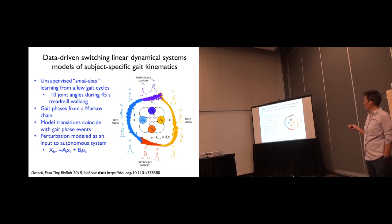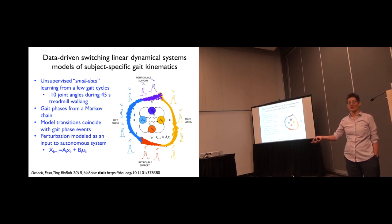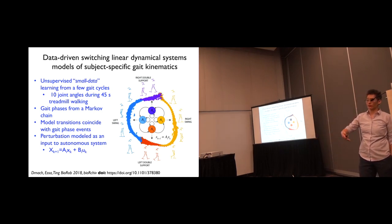And sort of post-hoc, we can look at these models and say, oh, that happened to coincide with single support and double support. And in fact, the transitions coincide with when we see force plate events that we didn't put in. And then because we have the human model here, we can actually add inputs where we stimulate a muscle in this case, or it could be an exoskeleton or any other type of interaction, and show how that changes.